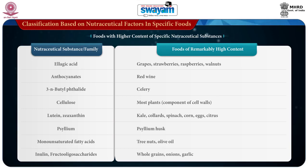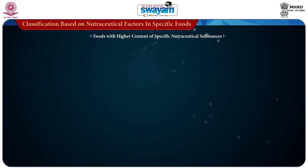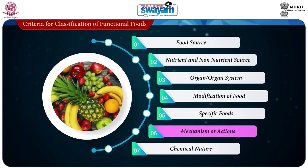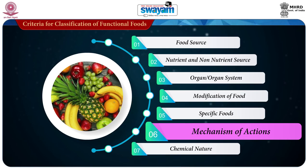Most plants contain cellulose, so they are a good source of cellulose. Lutein and zeaxanthin are present in kale, collard greens, spinach, corn, eggs and citrus fruits. Psyllium is present in psyllium husk, and monounsaturated fatty acids are present in tree nuts and olive oil. Inulin and fructooligosaccharides are present in whole grains, onions and garlic, whereas yogurt and other dairy products contain Lactobacillus and Bifidobacteria. Catechins are present in tea, cocoa, apples and grapes, and lignan is present in flax and rye.